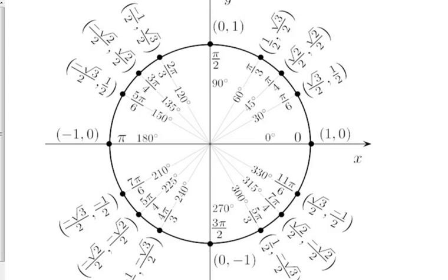Tangent — the unit circle doesn't give you explicitly the value for tangent, but there are a couple of different ways you can look at it. Tangent is opposite over adjacent, which on the unit circle is the y-coordinate over the x-coordinate. So you can look at it as y/x, or you can look at it as sine over cosine. Either way, that's how you figure out the tangent for an angle.